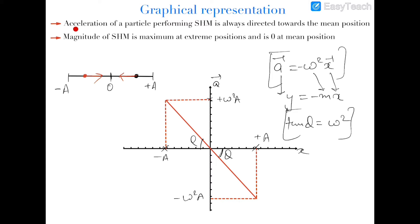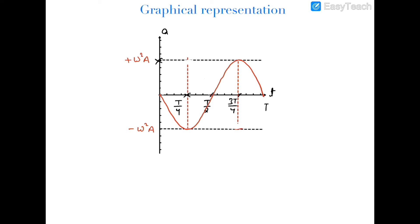Two important things to note: first, the acceleration of a particle performing SHM is always directed towards the mean position. Second, the maximum magnitude of acceleration in SHM is maximum at the extreme positions — it equals omega square a — and it is zero at the mean position. The mean position is the position where the net force acting on the particle is zero, and the acceleration of the particle in SHM is also zero there.